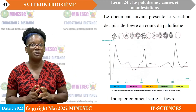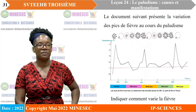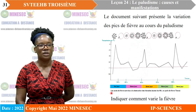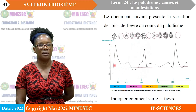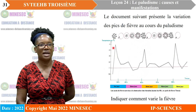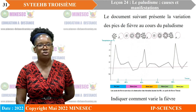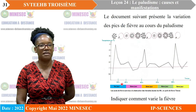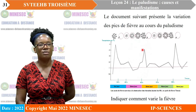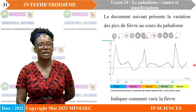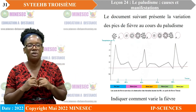Le deuxième document présente la variation des pics de fièvre au cours du paludisme. On analyse la courbe : les premières 24 heures, on a un premier pic de fièvre correspondant à l'éclatement des hématies parasitées. La fièvre n'est pas continue : elle monte puis descend. On attend encore 48 heures pour observer un nouveau pic de fièvre lors d'une nouvelle destruction des hématies. Ce procédé se répète jusqu'à la guérison. La fièvre paludique n'est donc pas une fièvre continue.